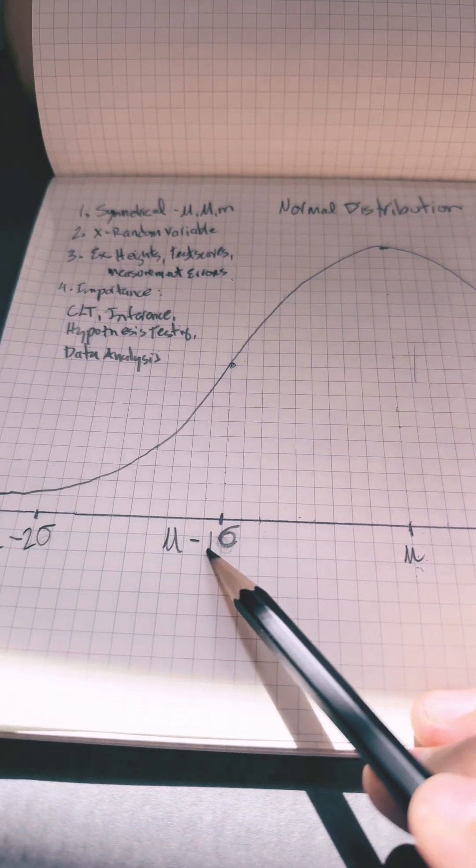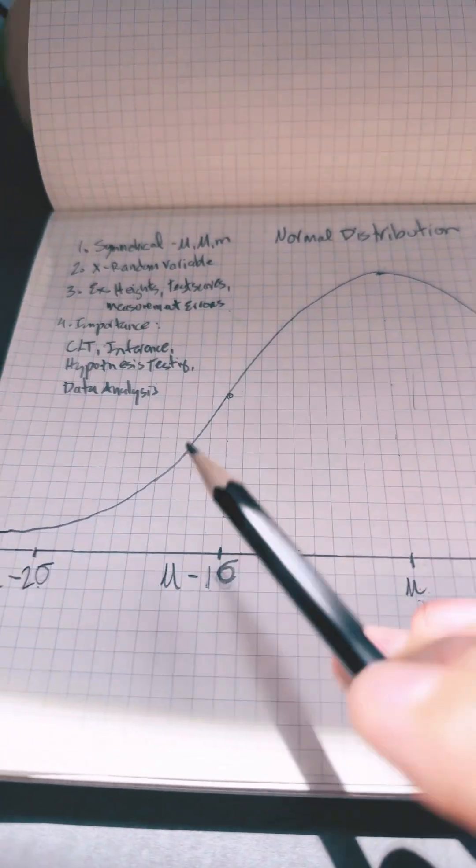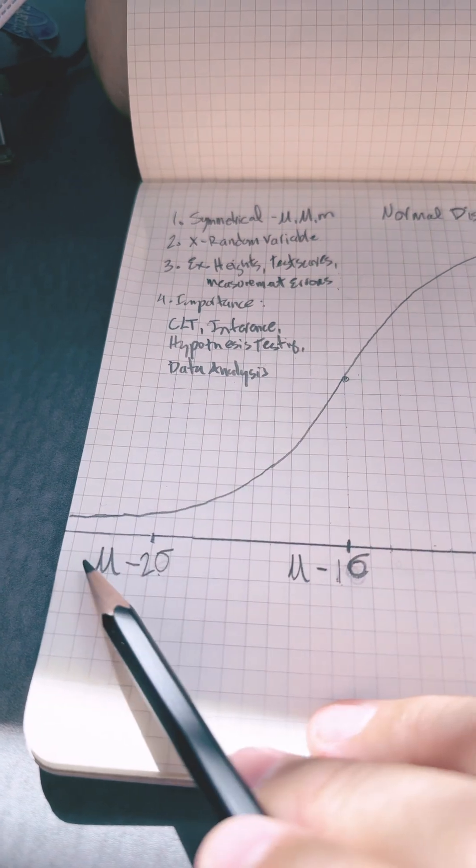And then we have minus one standard deviation to the left, and negative two standard deviations. This curve doesn't touch the x-axis.